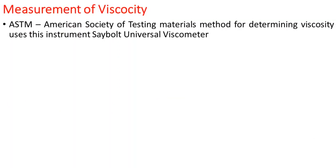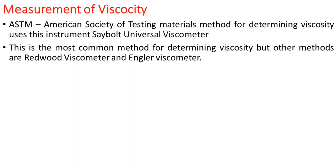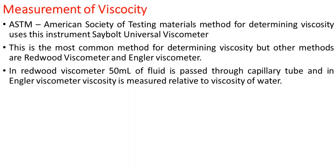The ASTM — American Society for Testing Materials — has standardized viscosity measurement using the Saybolt Universal Viscosity meter. Other viscosity meters include the Redwood viscometer and the Engler viscometer — note that viscosity meter and viscometer refer to the same thing. The Redwood viscometer passes 50 ml of fluid through a capillary tube, and the Engler viscometer measures viscosity relative to the viscosity of water.